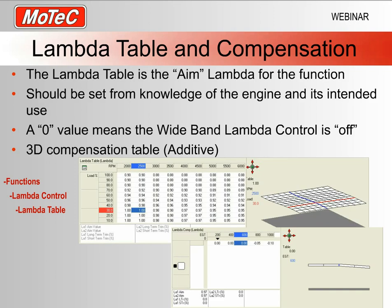For the lambda table and compensation table — on most of my screens I'll have a list showing whereabouts in the software each item is. To find the lambda table, go to Functions > Lambda Control > Lambda Table. To find the compensation table, go to Functions > Lambda Control > Comp.